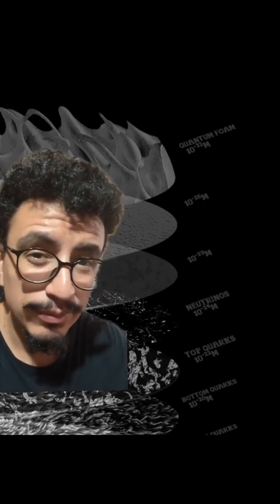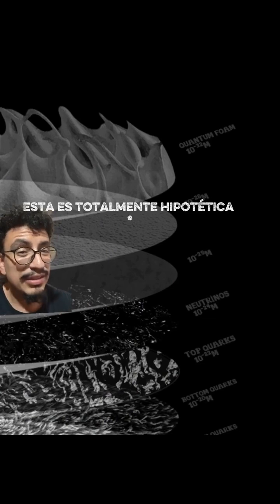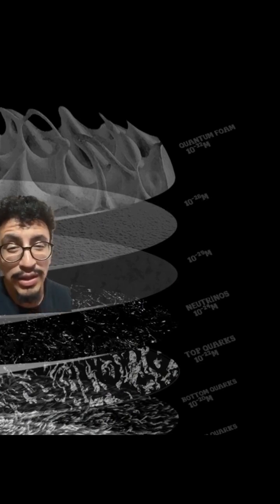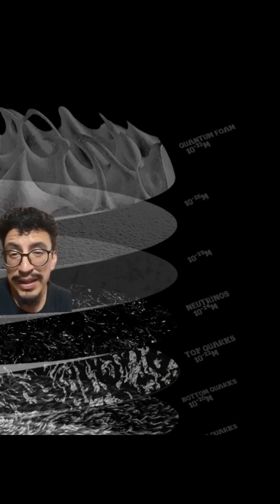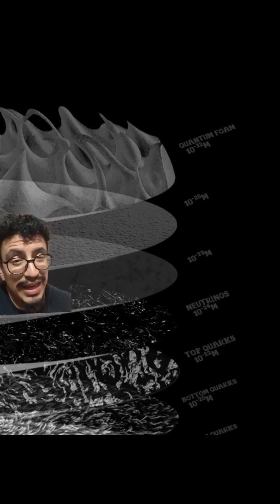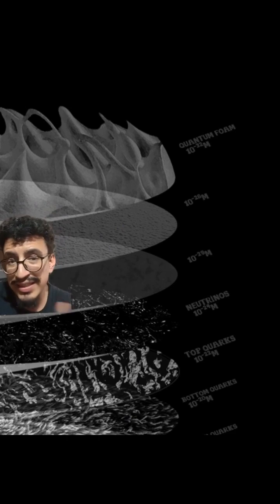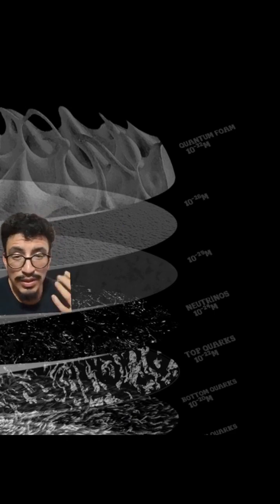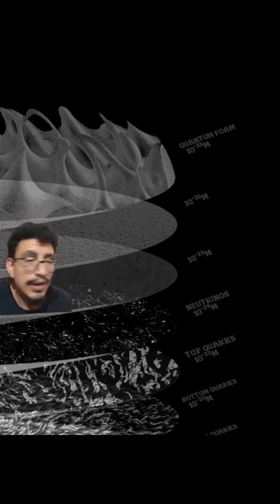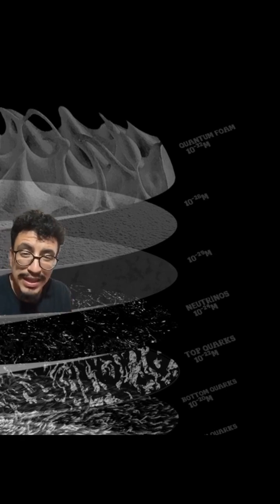Quantum foam is what we might call the quantum structure of space-time. We really don't know what this looks like at the smallest scale, but we know there are fluctuations in matter and energy — particles and antiparticles called virtual particles — that arise and cancel out automatically. All these fluctuations cause the fabric of space-time to not be necessarily smooth, but rather to have this foamy structure, completely imperceptible even to an atom.